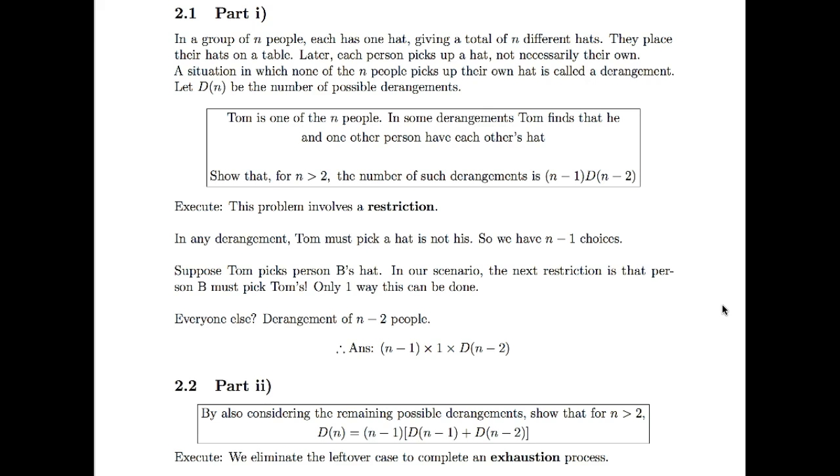And a derangement is just a situation where we ensure that none of the people have picked up their own hat. And then we'll say Tom's one of the n people, and we're going to first consider a special case where Tom finds that he picks up somebody's hat, and they pick up his hat as well. And we want to count the number of ways this can happen. So the idea is that what we've really done is that we've imposed a restriction. In any of the derangements we're given, Tom must pick a hat that is not his, and therefore we have n minus one different choices of this happening. So we first suppose Tom picks up person B's hat, or there's n minus one choices, nice and easy. Person B must pick up Tom's hat, and there's only one way that can be done, so we multiply by one here. And everyone else, we just have n minus two people, they are basically going to just be in their own derangement, so that's going to happen in D(n-2) ways, and that is basically going to give you the exact result that they were looking for here.